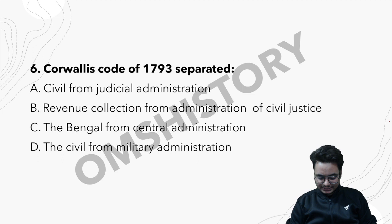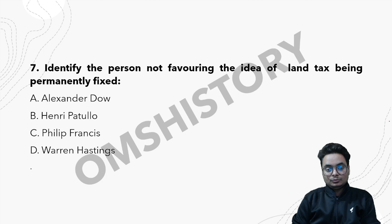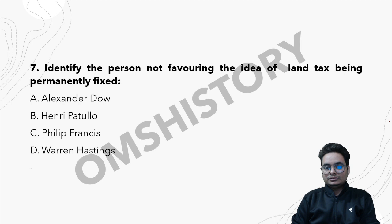The next question is about the Cornwallis Code of 1793 — a very important question. Then: identify the person NOT favoring the idea of land tax being permanently fixed. During the Permanent Settlement there was a debate where different people were of the view that land revenue should not be fixed — who among the following was not in favor of this?